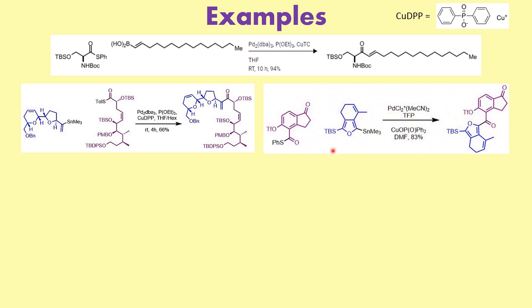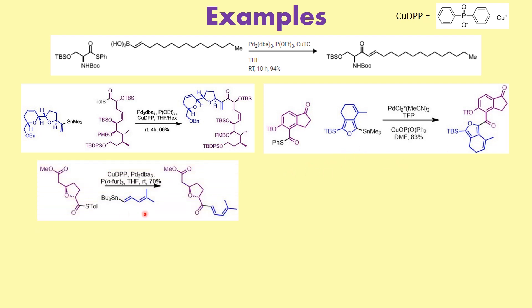Again, we have an organotin reagent and a thioester, and using a palladium-catalyzed cross-coupling reaction, what we form is a ketone. If you had to introduce a ketone moiety in normal circumstances it would have been very difficult, but here we have taken advantage of the cross-coupling reaction to carry out this particular transformation. Similarly, using an organotin species — more like a Stille coupling partner — under the Liebeskind-Srogl cross-coupling reaction conditions, what you must keep in mind is the presence of a copper catalyst.